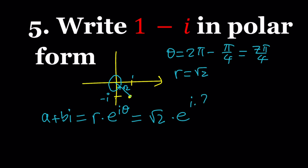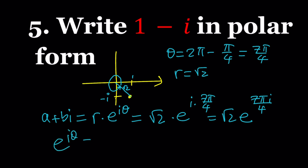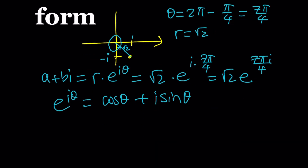A number in the form a plus bi can be written as r times e to the power i theta — that is the polar form. In this case, r is square root of 2 and theta is 7π over 4. You can write it as square root of 2 times e to the power 7πi over 4. You could also write it using Euler's formula: e to the power i theta equals cosine theta plus i sine theta, but the exponential form is more compact.